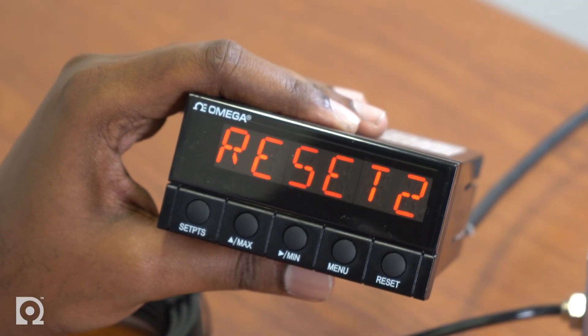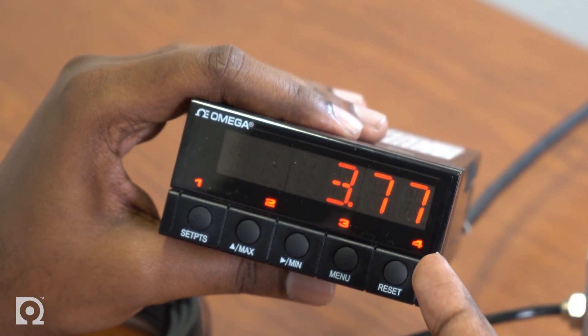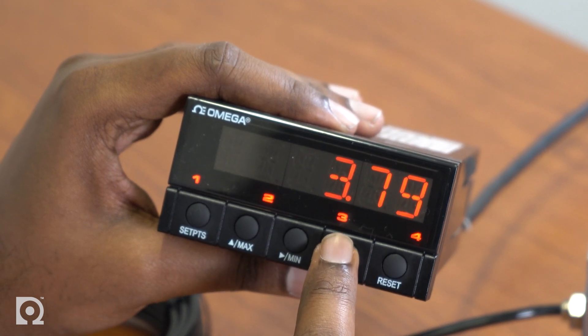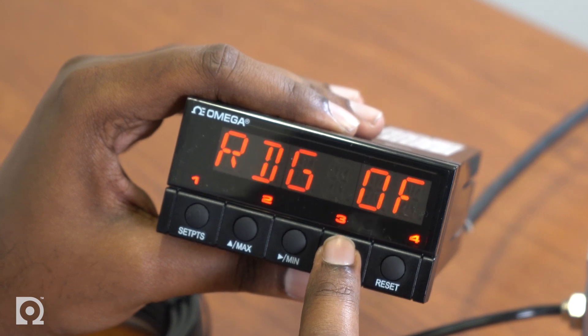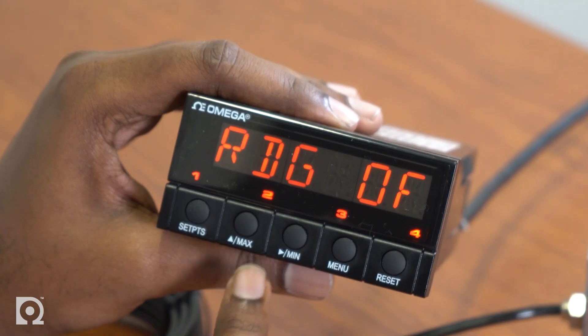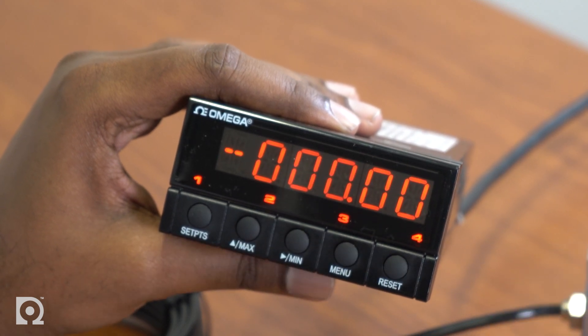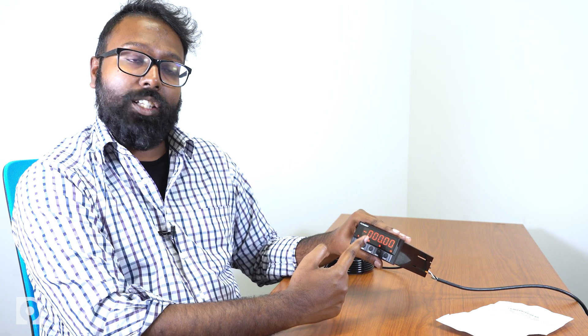Now you'll notice that there is a small offset in the meter, because most load cells have an inherent zero offset. To offset this value at no load, press the menu button continuously until you see RDG OF. RDG OF stands for reading offset. Press the min button to go into this menu, and it'll show you negative zero zero zero point zero zero. Now put a value over here to offset the value that we saw initially. At no load, we saw three point eight.